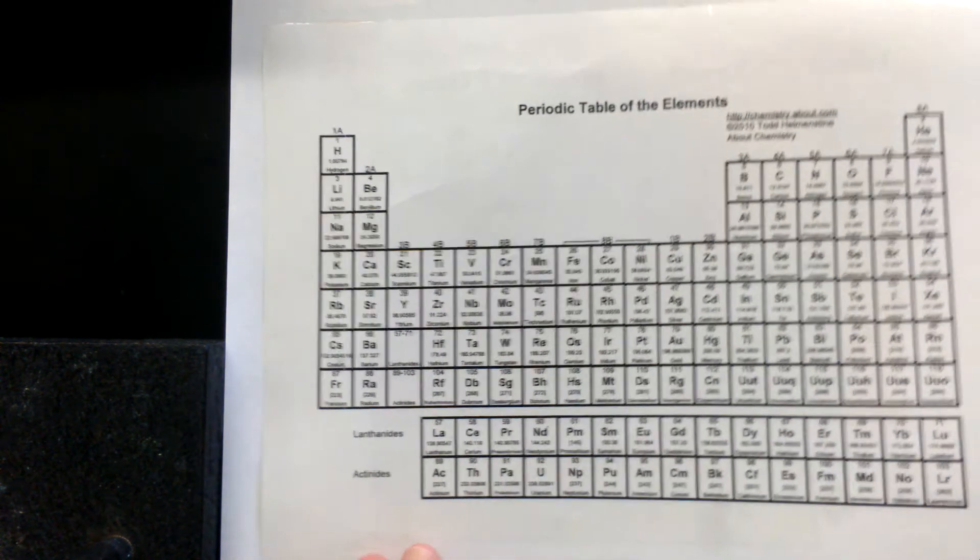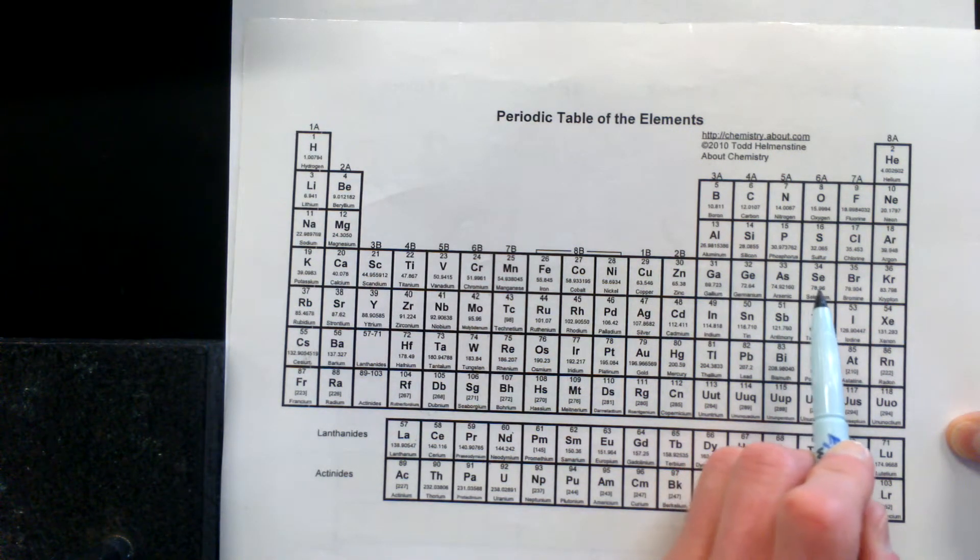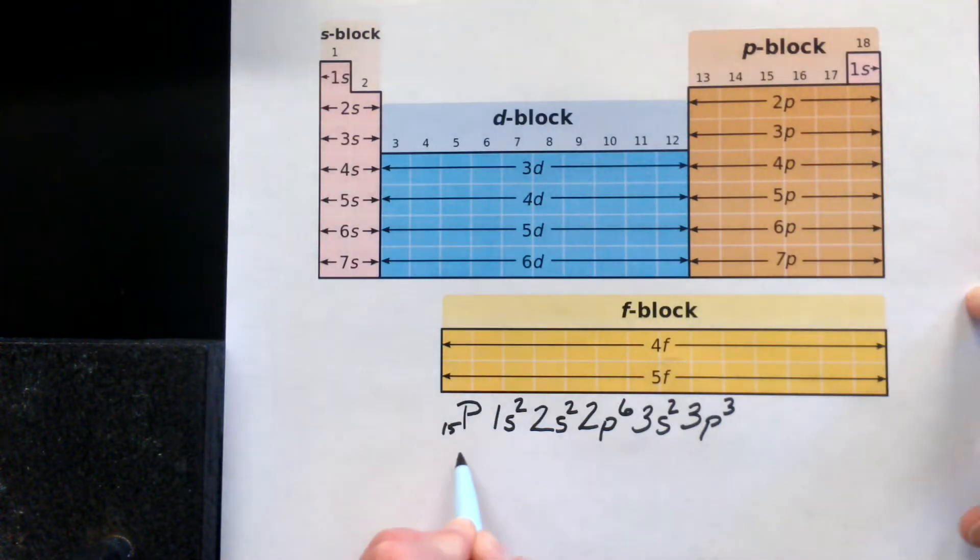Let's go a little bit larger. Let's try selenium here, Se, number 34. So selenium, atomic number 34, 34 protons. We start with the configuration.